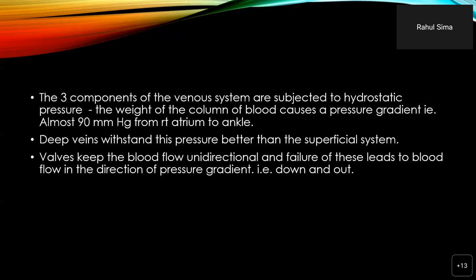These three components of the venous system are subjected to a hydrostatic pressure, which is the weight of the column of blood from the heart to the ankle. In a tall person, it may be as much as 90 mmHg. The deep veins withstand this pressure much better than the superficial system, and the valves keep blood in a unidirectional flow, the failure of which leads blood to flow down and out along the pressure gradient.